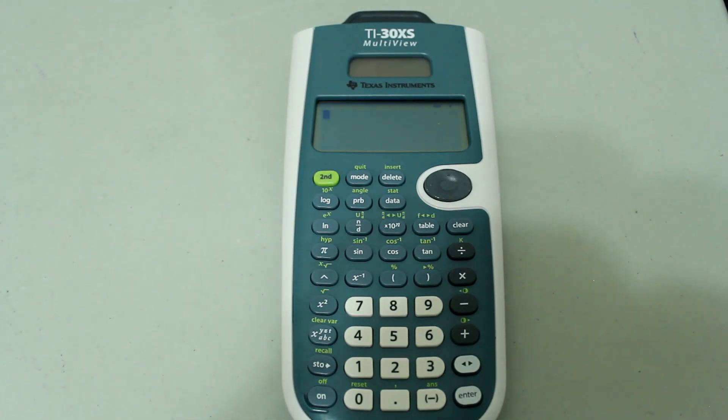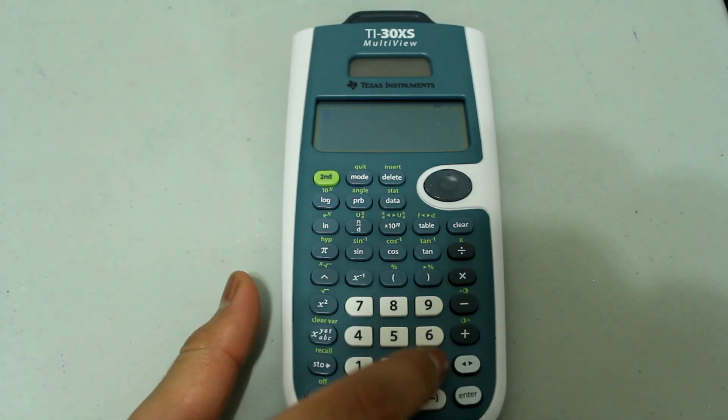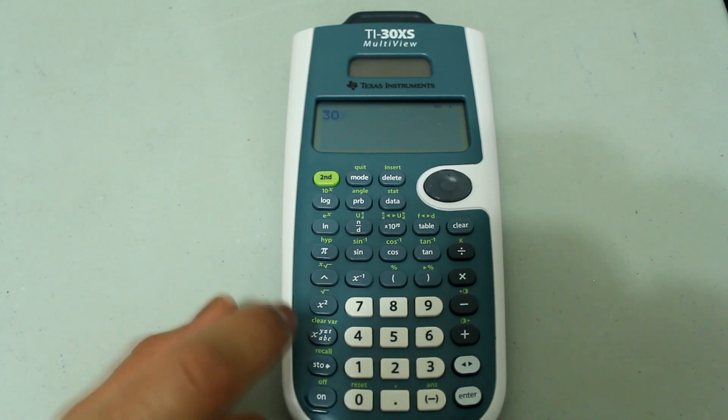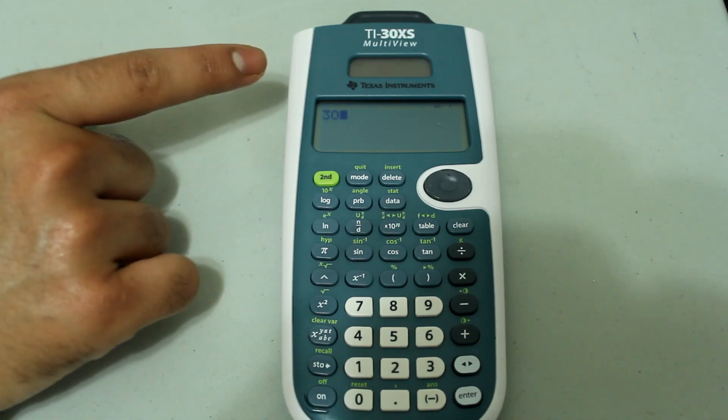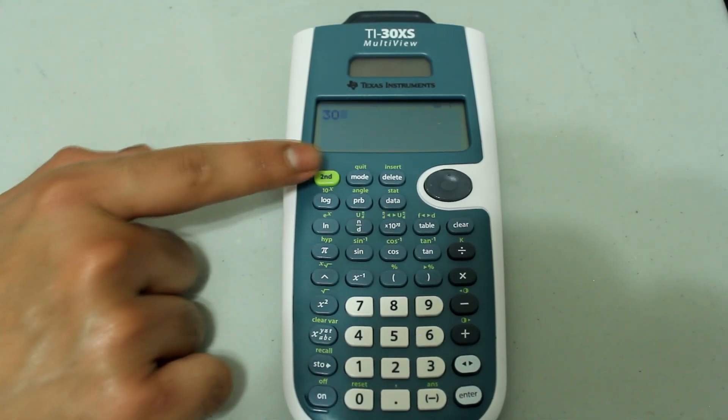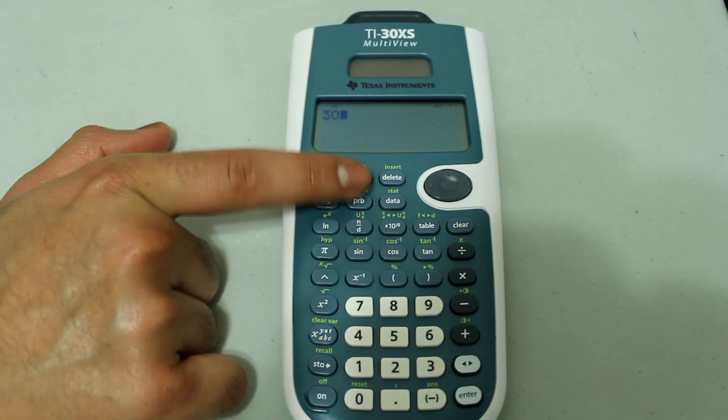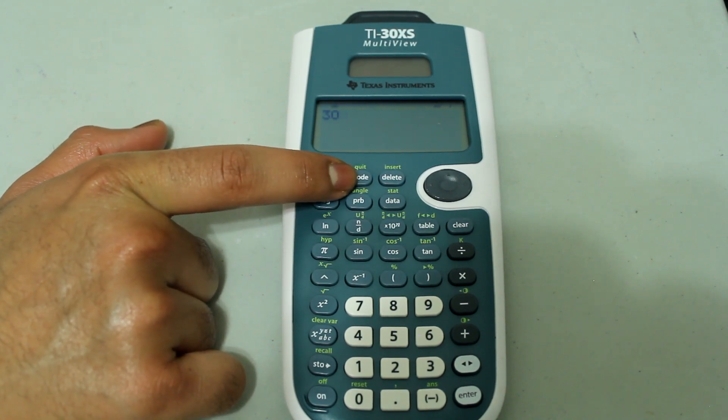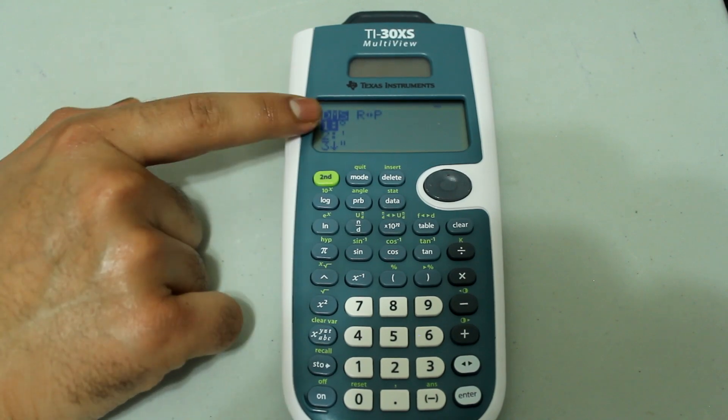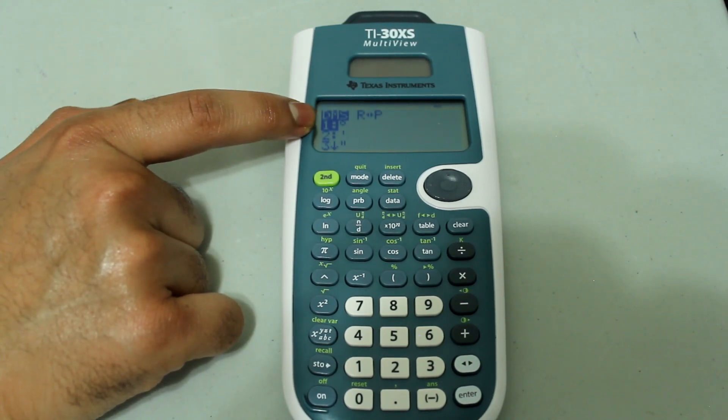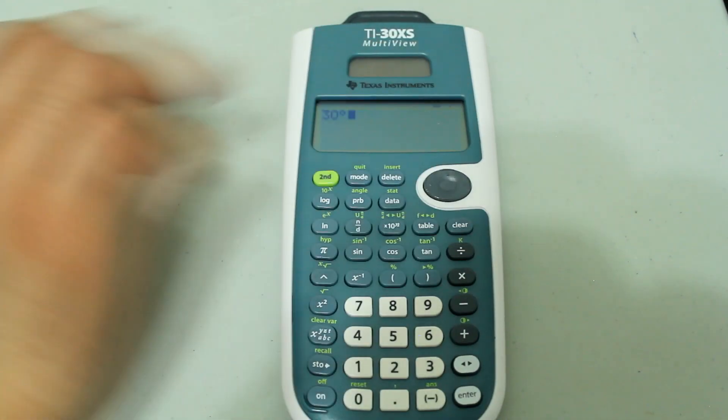Now we are going to type in 30 degrees, so type in 30. And we are going to tell the calculator that this entry is in degrees. So press second and the PRB button to select angle. And then degrees is the first option, so just press enter.